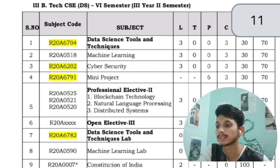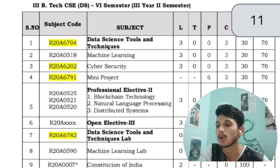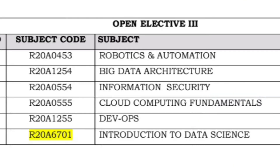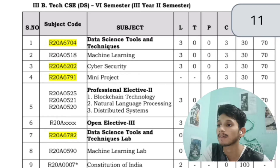In the second semester of third year, you will have Data Science Tools and Techniques, Machine Learning, Cyber Security, and Constitution of India. Professional Elective 2 includes Blockchain Technology, Natural Language Processing, and Distributed Systems. Open Elective 3 includes Robotics and Automation, Big Data Architecture, Information Security, Cloud Computing Fundamentals, DevOps, and Introduction to Data Science. You will also have a Mini Project, with labs for Data Science Tools and Techniques and Machine Learning.